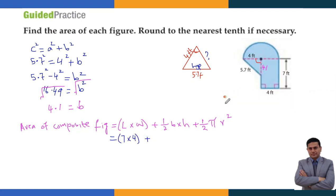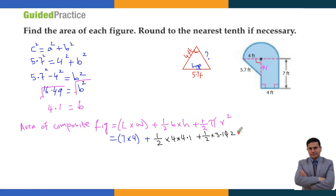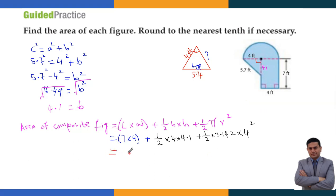Plus area of triangle: half times base times height. Base is 4 and height is 4.1 — use the two sides connected by the 90 degree angle. Do not use 5.7 because that is the hypotenuse, and the hypotenuse is never used for finding area. So: half times 4 times 4.1, plus half times pi (3.142) times r². The radius r is 4, so r² is 16.